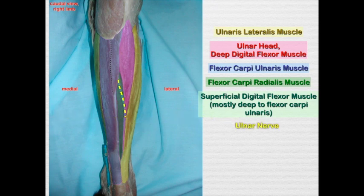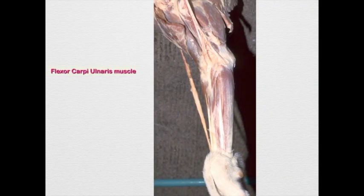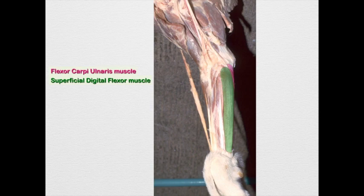Remember, that superficial digital flexor muscle is innervated by the median in the bovine. If it doesn't say digital in the name, it's not going to act upon the digits. Here we have the canine — you see a little bit of the flexor carpi ulnaris muscle. Notice how superficial that superficial digital flexor muscle is here, compared to the horse where it is more deep. Then we have the flexor carpi radialis muscle and the pronator teres.